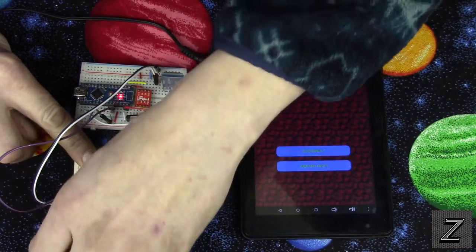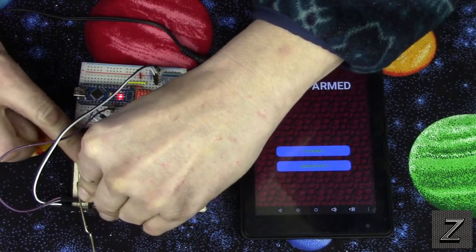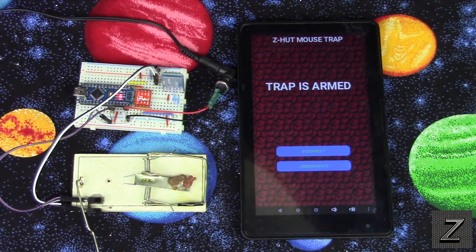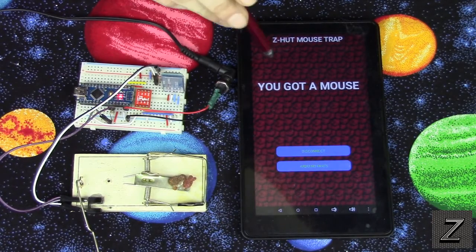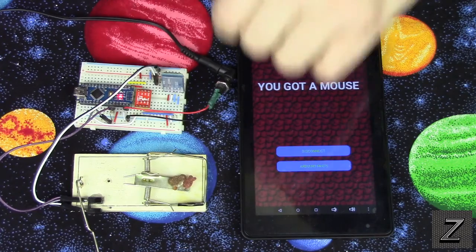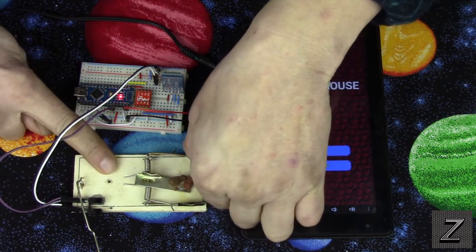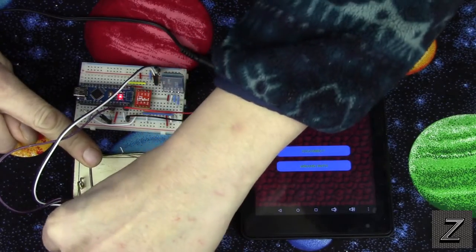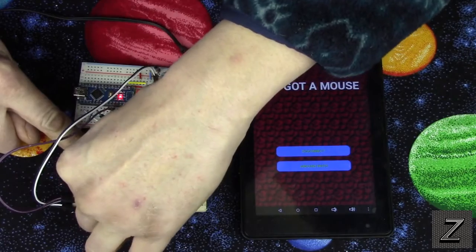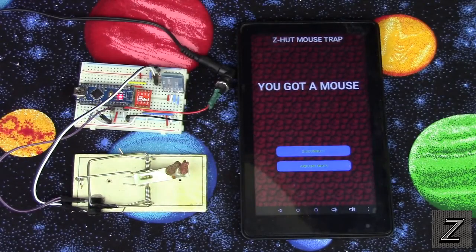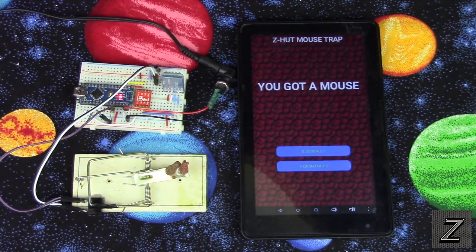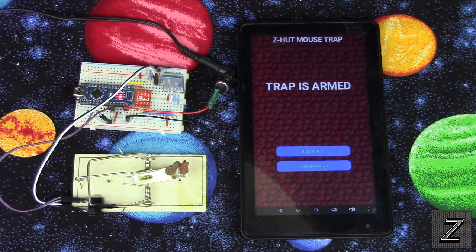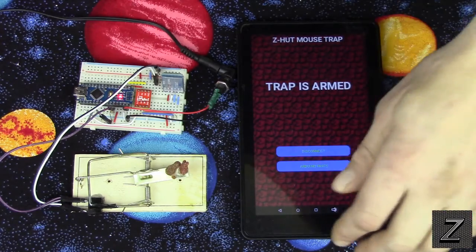I'll go ahead and spring the trap and you see it's telling you you got a mouse. So when you see that, you go out, throw the mouse out of your trap, and then simply reset your trap. See? Trap is armed.